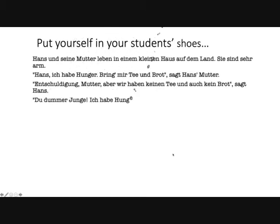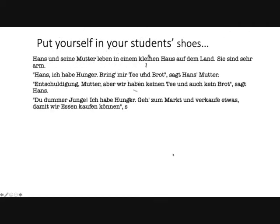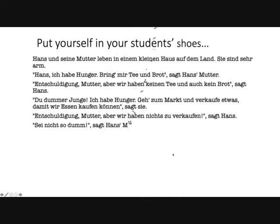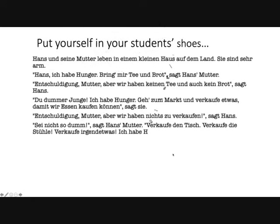Du dummer Junge, ich habe Hunger. Geh zum Markt und verkaufe etwas damit. Wir essen kaufen können, sagt sie. Entschuldigung, Mutter, aber wir haben nichts zu verkaufen, sagt Hans. Sei nicht so dumm, sagt Hans' Mutter. Verkaufe den Tisch. Verkaufe die Stuhle. Verkaufe irgendetwas. Ich habe Hunger.